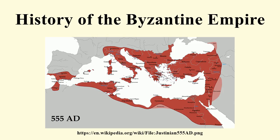During the reign of Maurice, the Empire's eastern frontier was expanded and the north stabilized. However, his assassination caused a two-decade-long war with Sassanid Persia which exhausted the Empire's resources and contributed to major territorial losses during the Muslim conquest of the 7th century. In a matter of years the Empire lost its richest provinces, Egypt and Syria, to the Arabs.